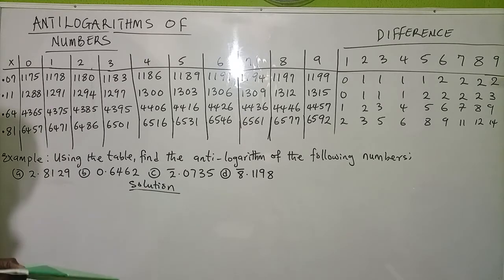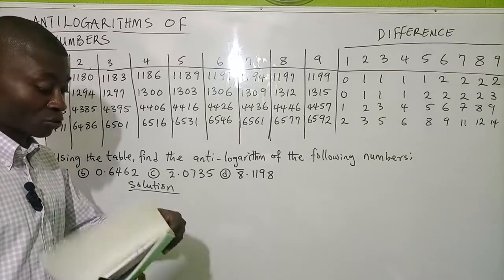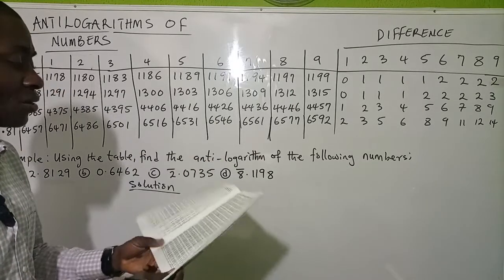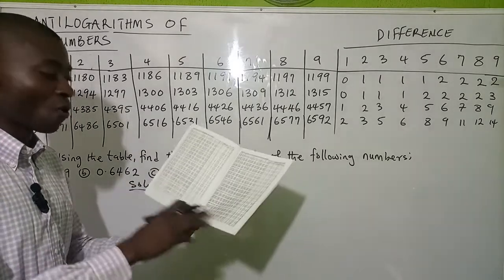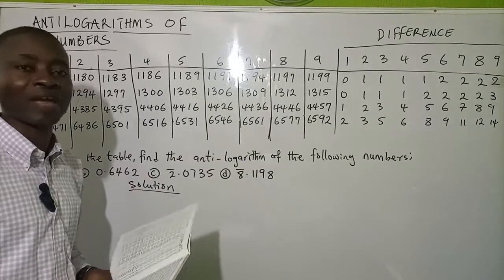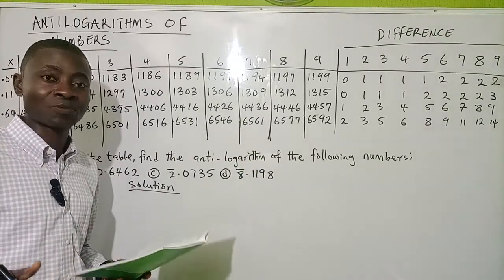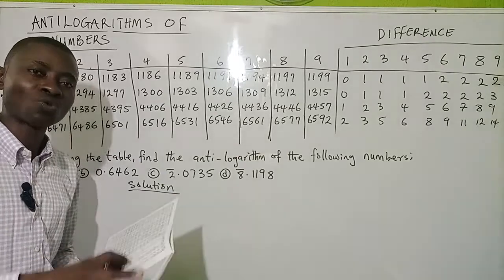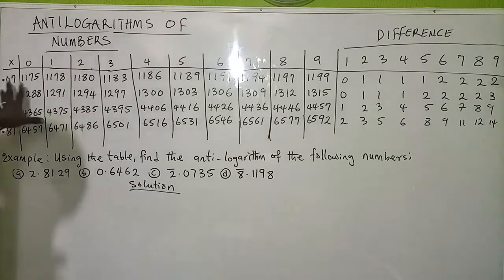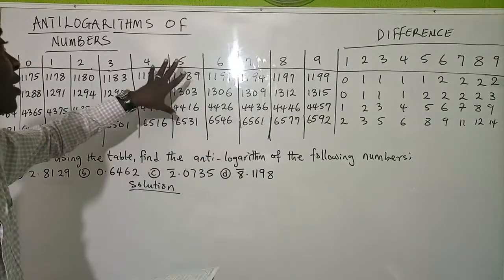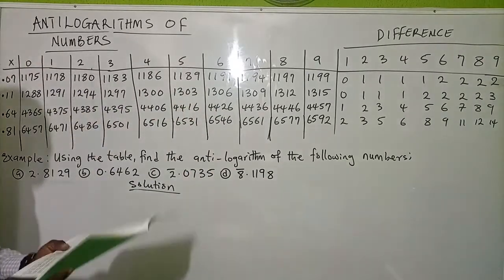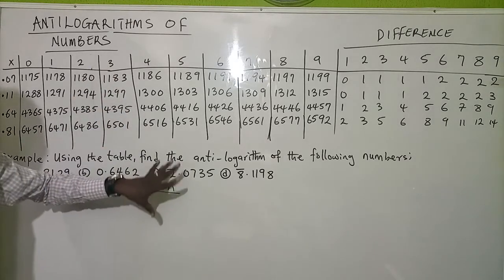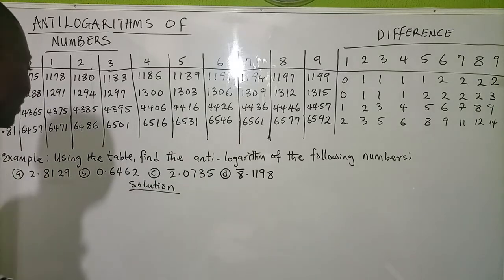In your four-figure table or mathematical school table you will find the antilog table on pages four and five. In some mathematics textbooks you can also find it there — they carry the same values. I have an extract of the antilog table here on the board, which is the same as what you have in your table. We're using this to explain how we can easily find the antilog readings of these numbers.